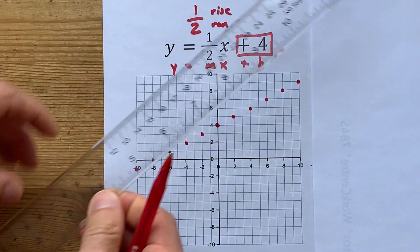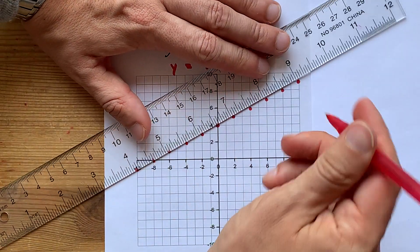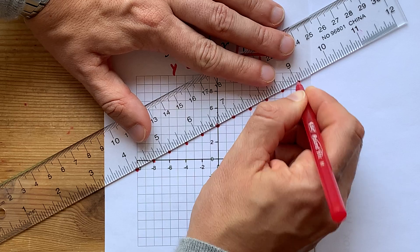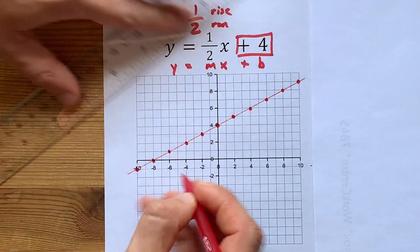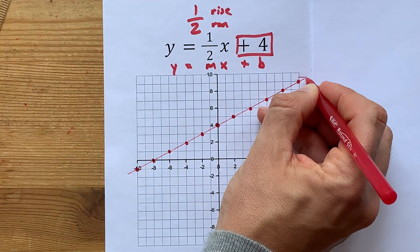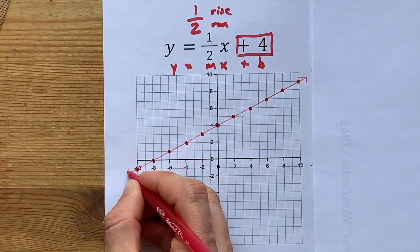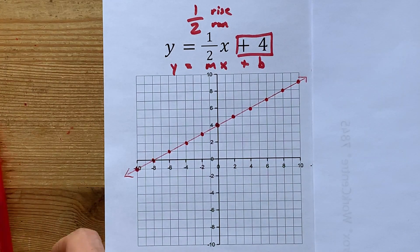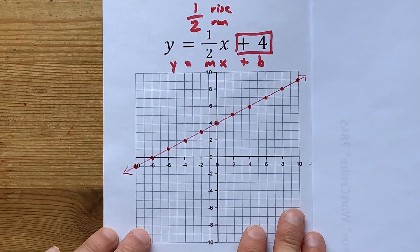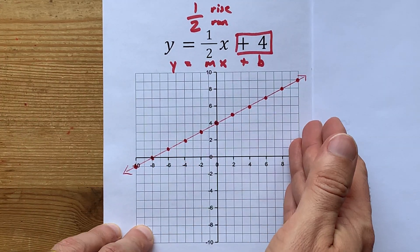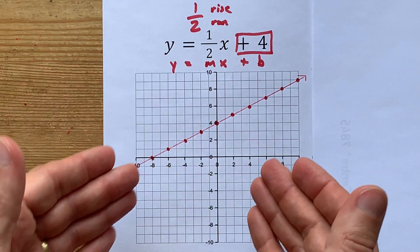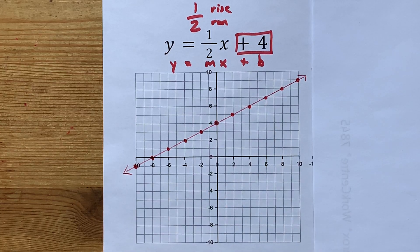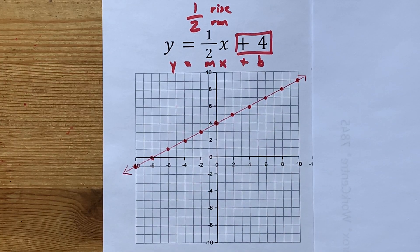The final touch is to actually draw a line through those points. Don't forget to celebrate by putting arrows at both ends to show it goes infinitely in both directions. And then you're done — that's all it took. I knew you could do it. Thanks for being with me, and best of luck.